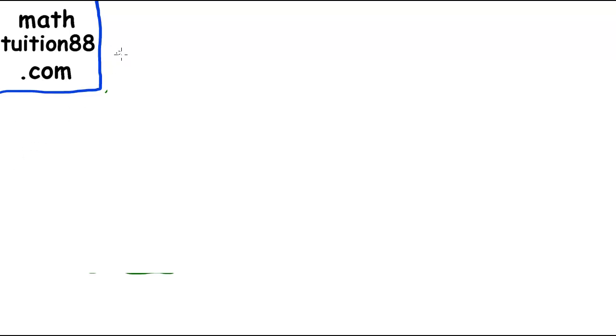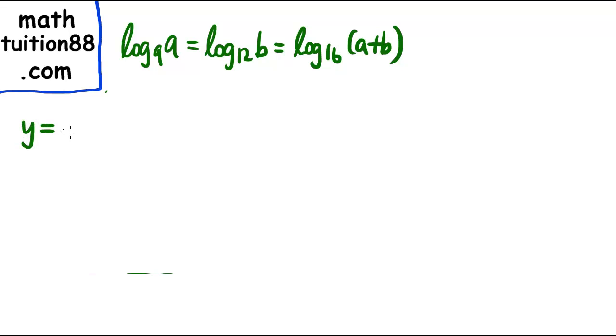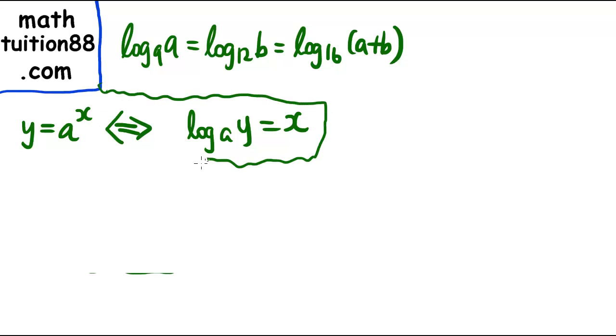So let me write the question here again quickly. Log₉a = log₁₂b = log₁₆(a+b). So first we need to know a basic fact: y = aˣ implies log_a(y) = x. And it goes the other way: log_a(y) = x implies aˣ = y. So this is a really important and useful fact.